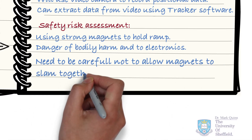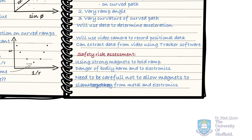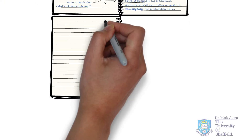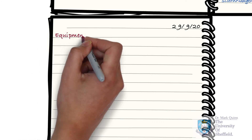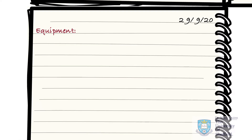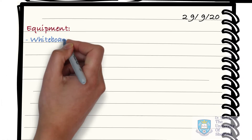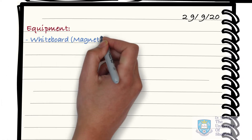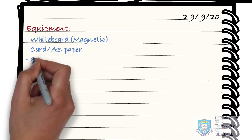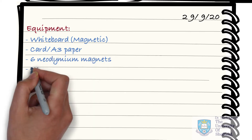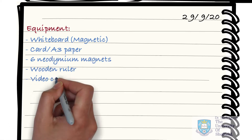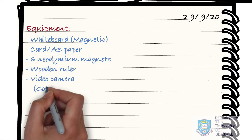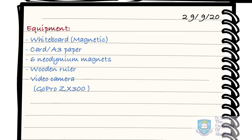The practical work of an experiment begins with sourcing the equipment. You may already know which items are needed, or you may initially try out different ideas using different equipment to solve the experimental problem. Either way, record which equipment you've ended up using — this is for future reference. Also, take time to record the model numbers of the equipment and the resolution of any measurement devices.